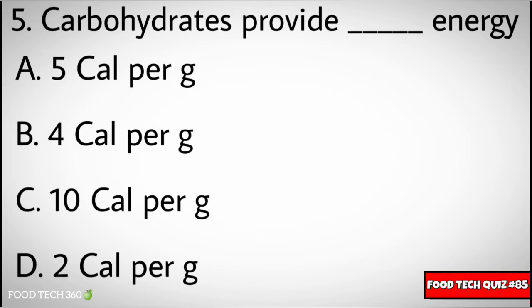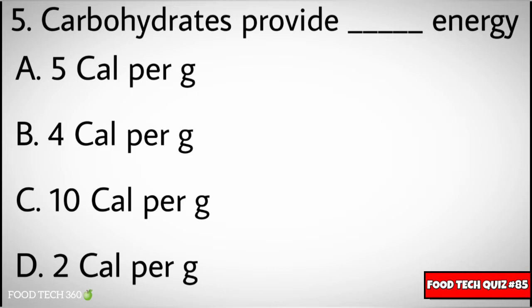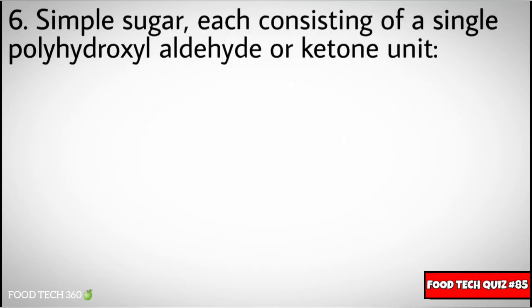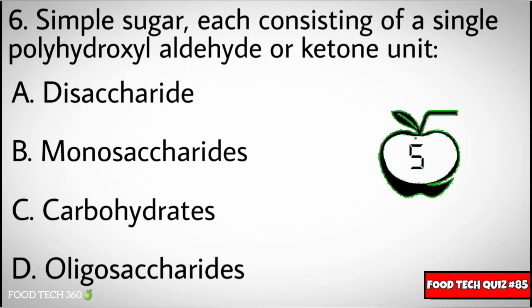Question number five: carbohydrates provide how many calories. Options: A) 5 calories per gram, B) 4 calories per gram, C) 10 calories per gram, D) 2 calories per gram. Correct answer: B) 4 calories per gram. Question number six: simple sugars, each consisting of a single polyhydroxyl aldehyde or ketone unit. Options: A) disaccharide, B) monosaccharides, C) carbohydrates, D) oligosaccharides.